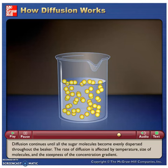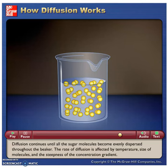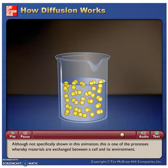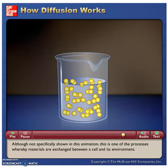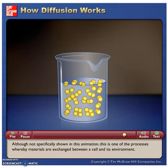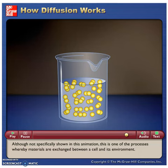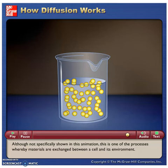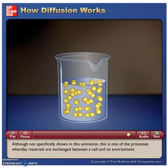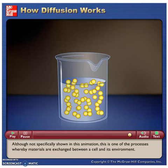The rate of diffusion is affected by temperature, size of molecules, and the steepness of the concentration gradient. Although not specifically shown in this animation, this is one of the processes whereby materials are exchanged between a cell and its environment.